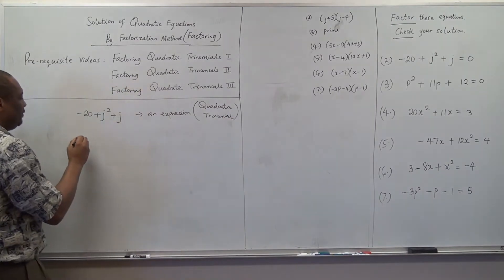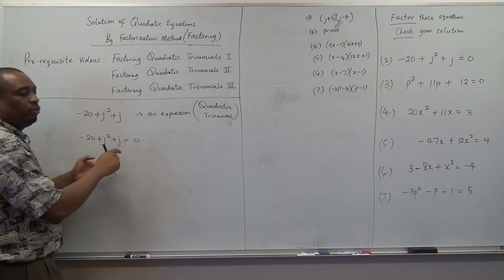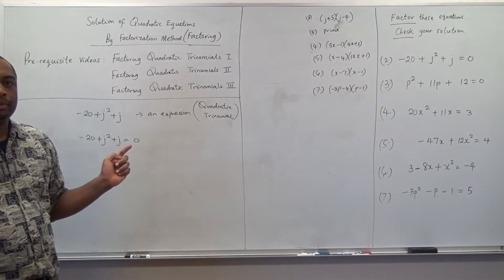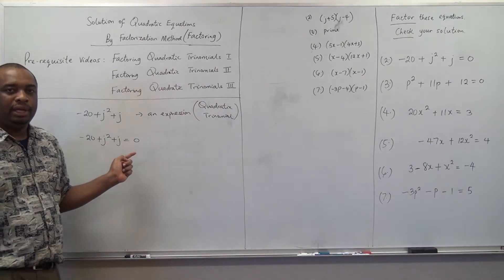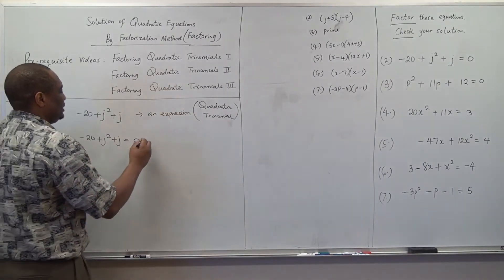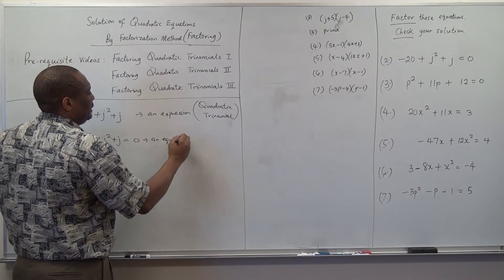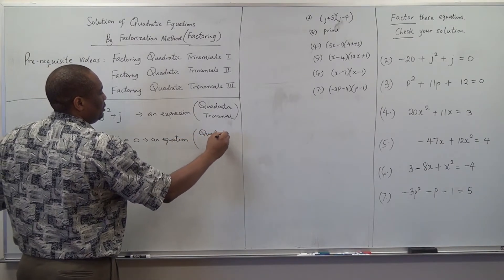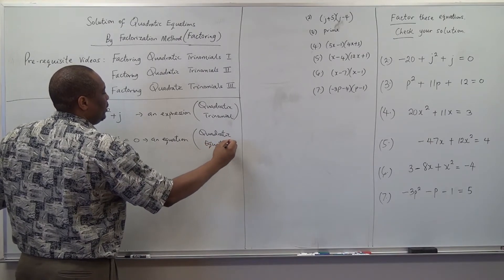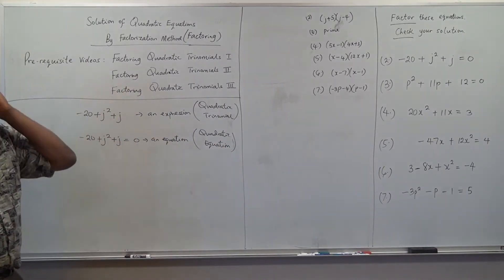When you now have it as negative 20 plus j squared plus j equal to zero — when you have the equal sign — remember the video I did on linear equations, I explained what a linear equation is. The same thing here: a quadratic equation. This is now called a quadratic equation. You can also call the other one a quadratic expression.